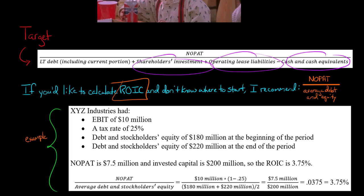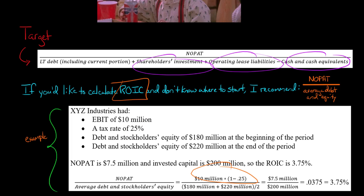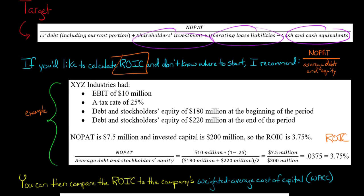To calculate XYZ Industries' return on invested capital: their NOPAT is seven and a half million dollars — that's EBIT times one minus the tax rate, so ten million times one minus 0.25 equals 7.5 million. In the denominator, we take the average debt and stockholders' equity: 180 million plus 220 million divided by two gives an average invested capital of 200 million. So the return on invested capital is 7.5 / 200 = 0.0375, or 3.75 percent.